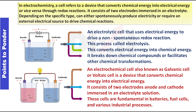An electrochemical cell, also known as a galvanic cell or voltaic cell, is a device that converts chemical energy into electrical energy. It consists of two electrodes — anode and cathode — immersed in an electrolyte solution. These cells are fundamental in batteries, fuel cells, and various industrial processes.